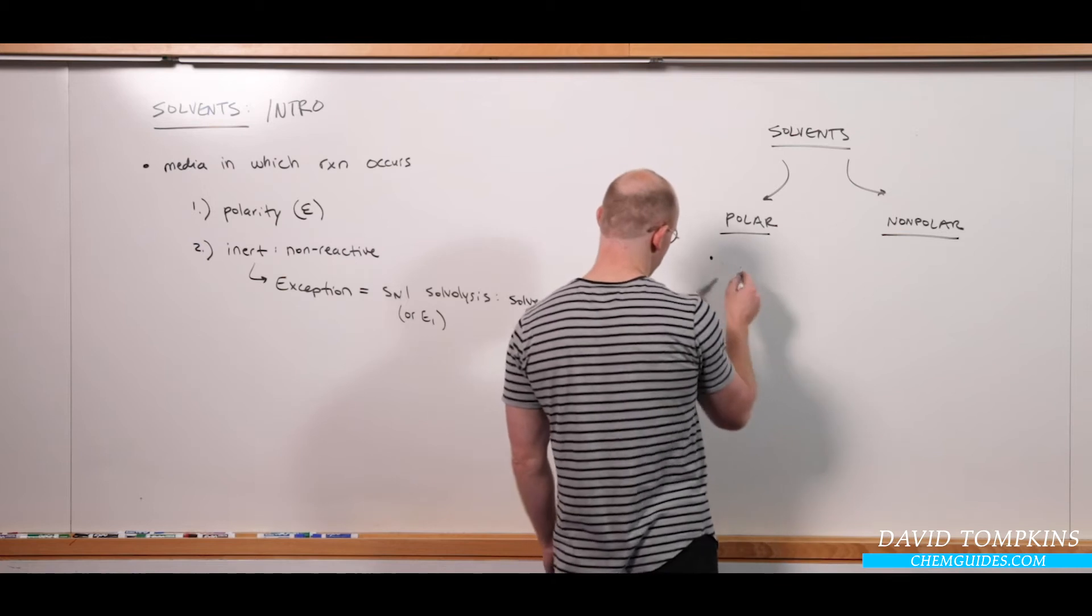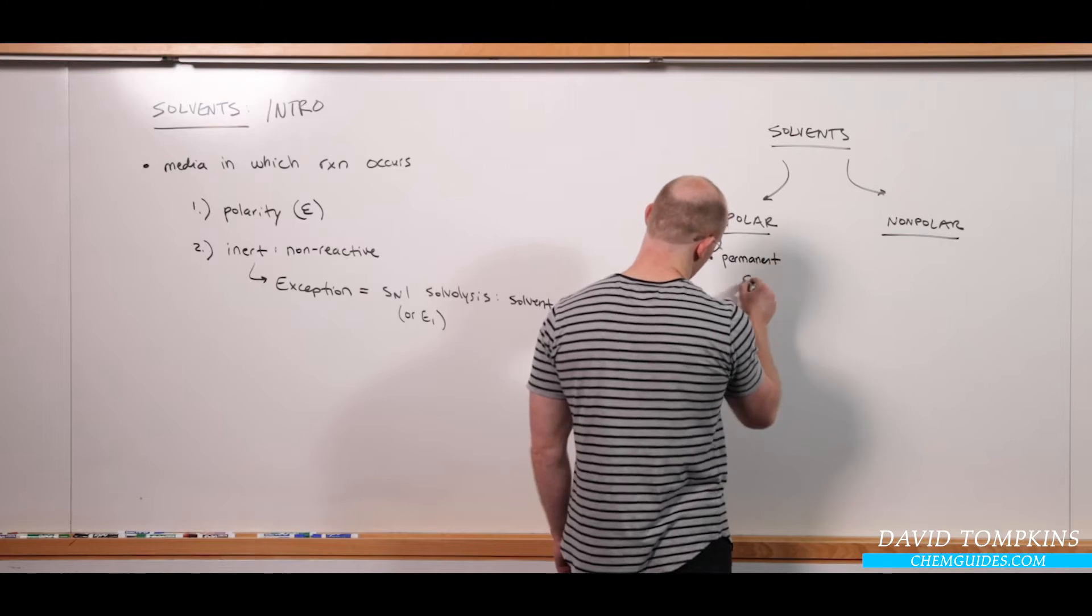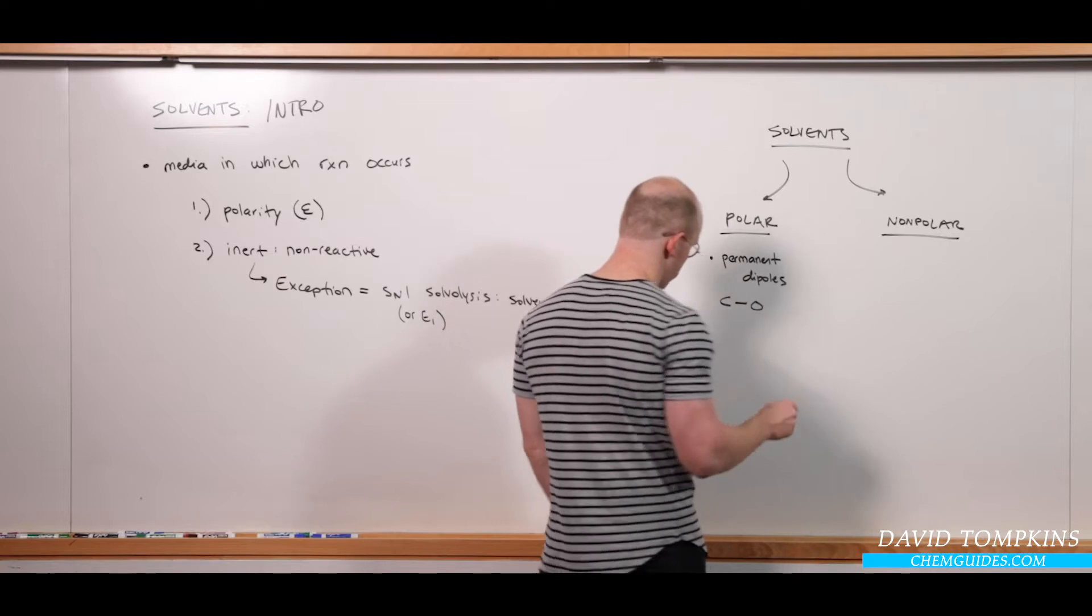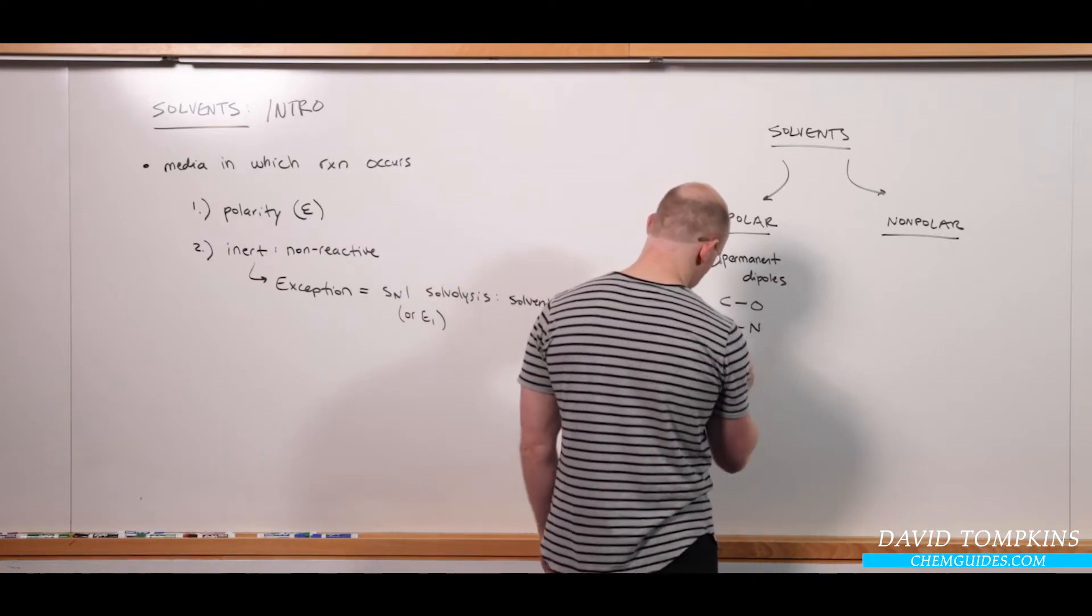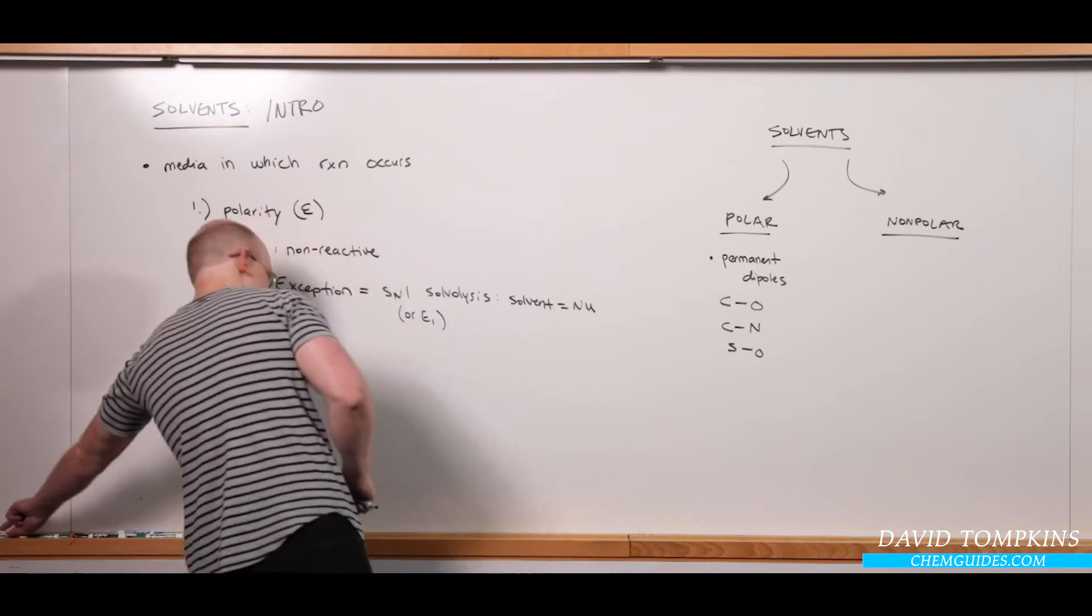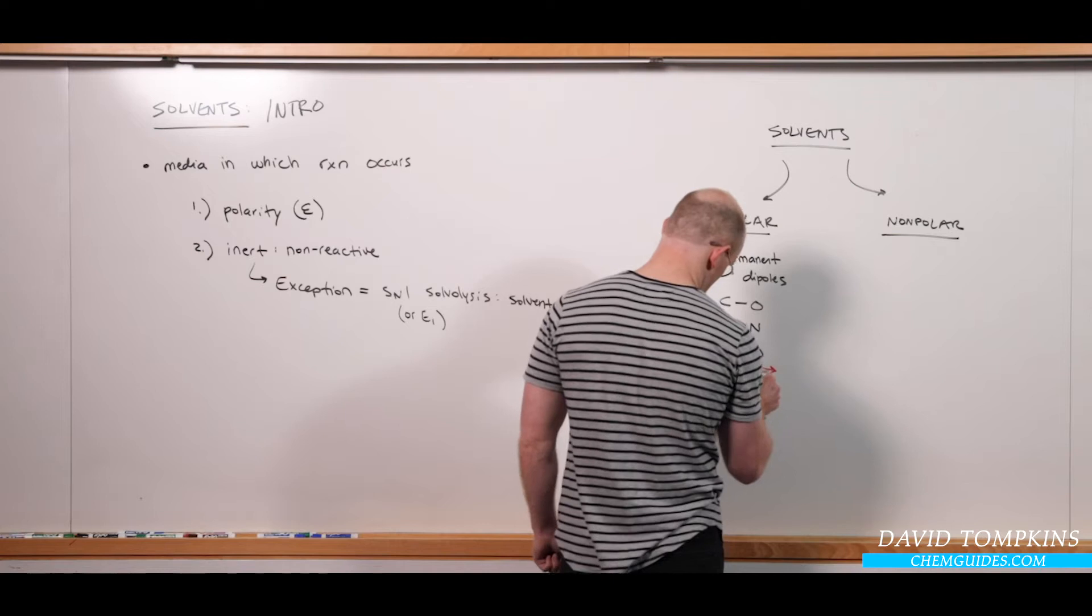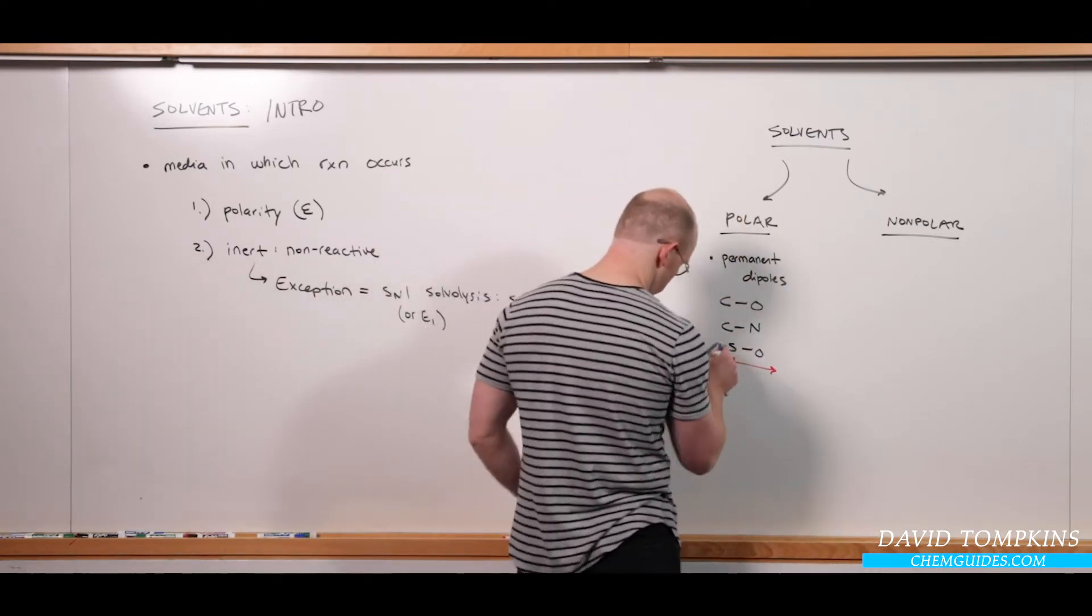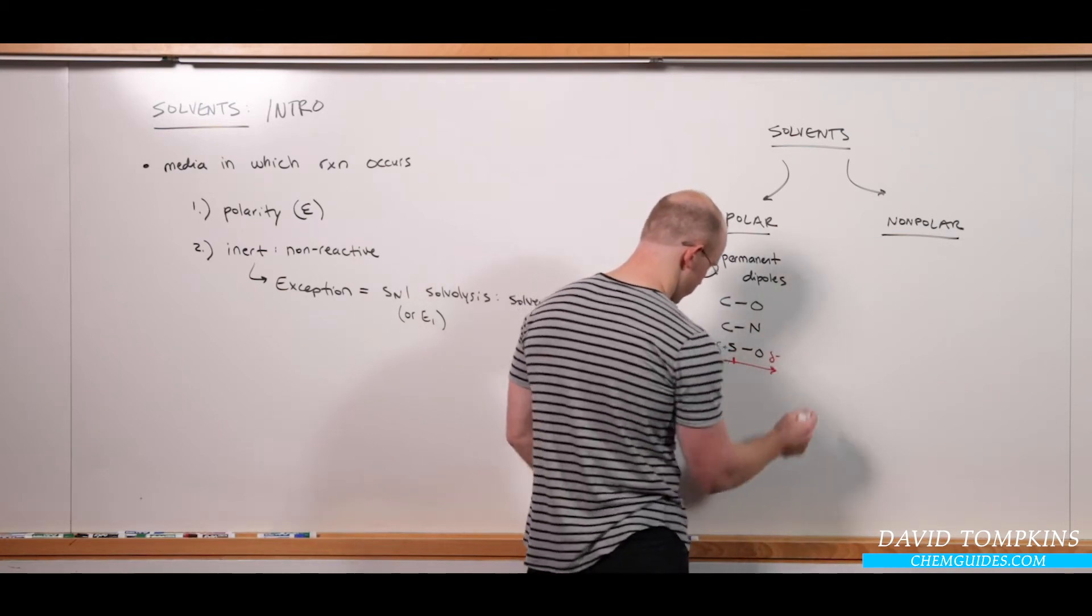But polar solvents, of course, are going to be molecules that have permanent bond dipoles. They will contain functional groups like CO bonds, CN bonds, maybe sulfur oxygen bonds, et cetera. And in these functional groups, there are some key bond dipole that leads to a charge separation, where oxygen is more electronegative, of course, than sulfur, and therefore the sulfur has a positive partial charge, and the oxygen has a partial negative charge.